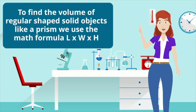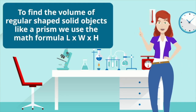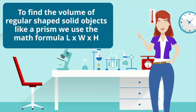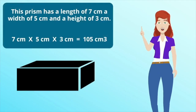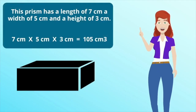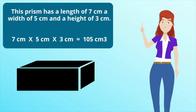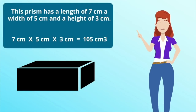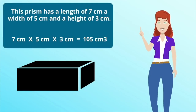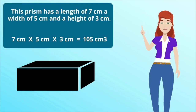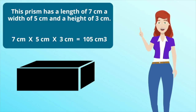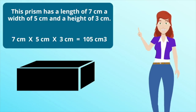To find the volume of regular-shaped solid objects like a prism, we use the math formula length times width times height. This prism has a length of 7 cm, a width of 5 cm, and a height of 3 cm. 7 times 5 times 3 equals 105 cm cubed.